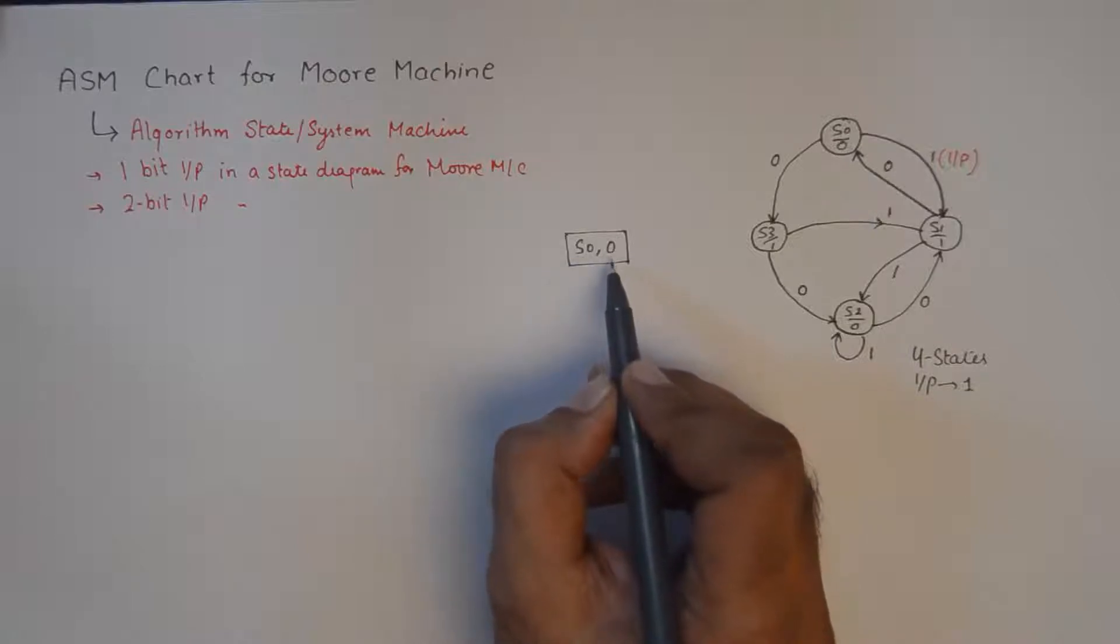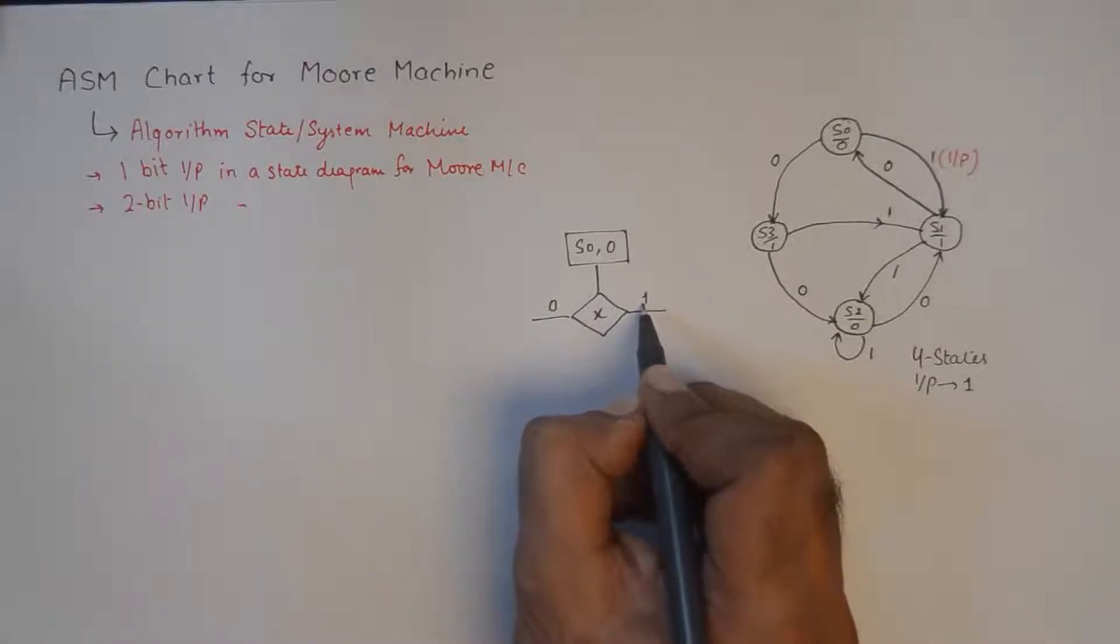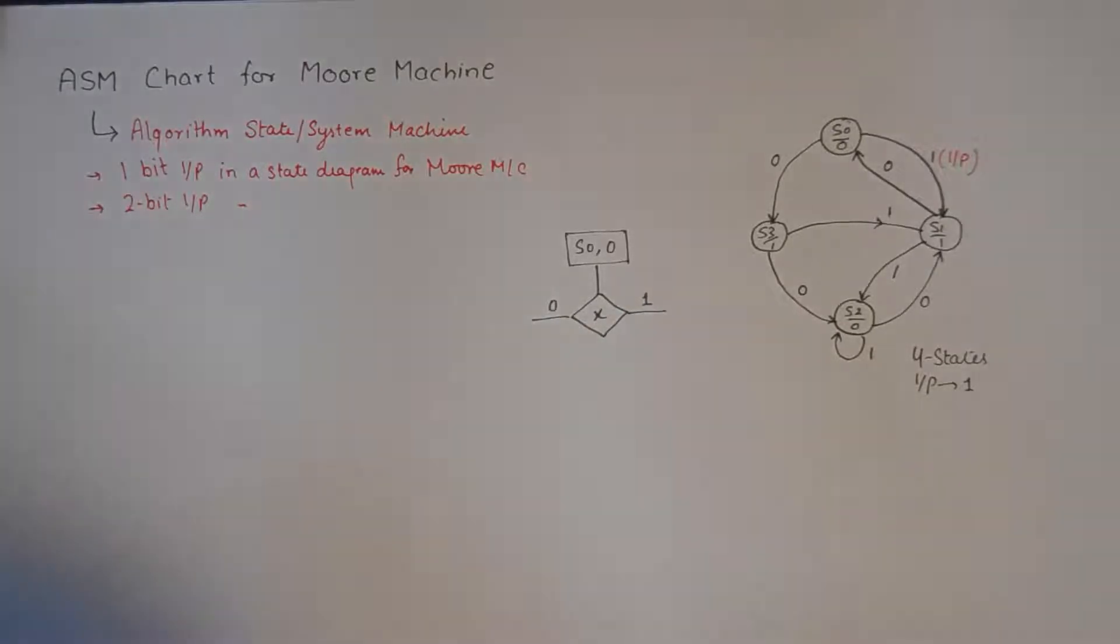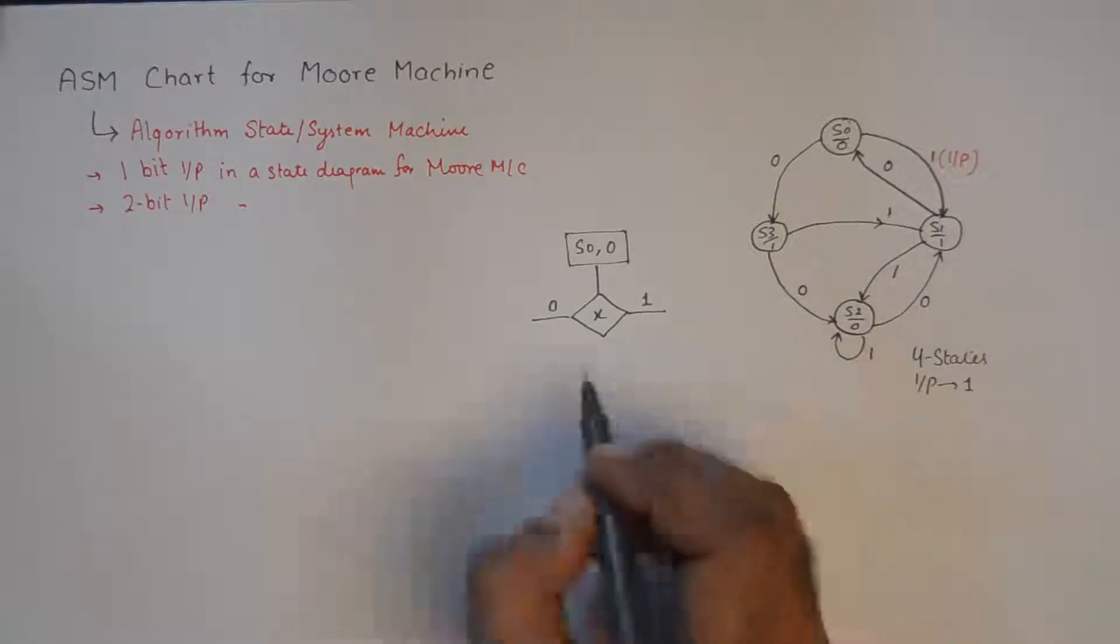It is represented using a rectangular box which is known as the state box. State box S0 with an output zero. And now at this state we have two options: either we can get a zero at the input or we can get a one at the input. When we get a zero we go to state three, and when we get a one we go to state one. So we need to draw another state, S1 whose output is one.